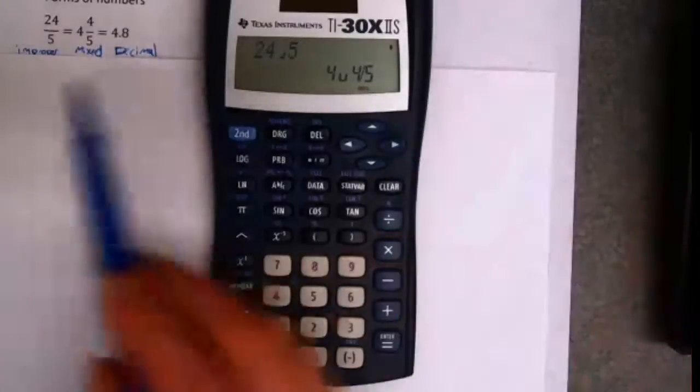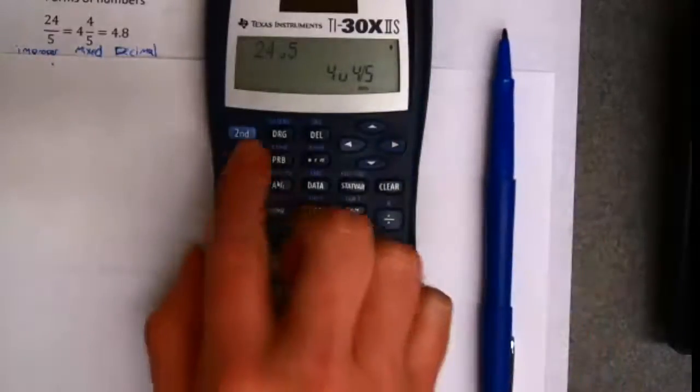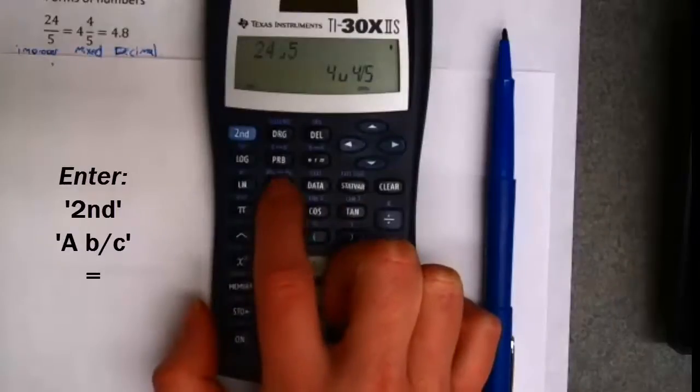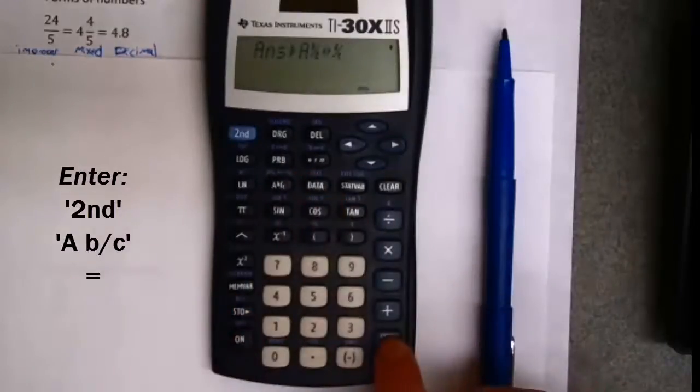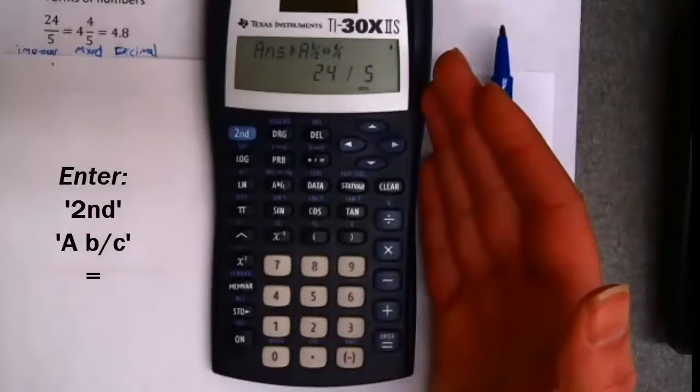What if I wanted my calculator to display this as an improper fraction? If you hit your second key, and hit that same button, we can switch back and forth. So here's my fraction as an improper fraction.